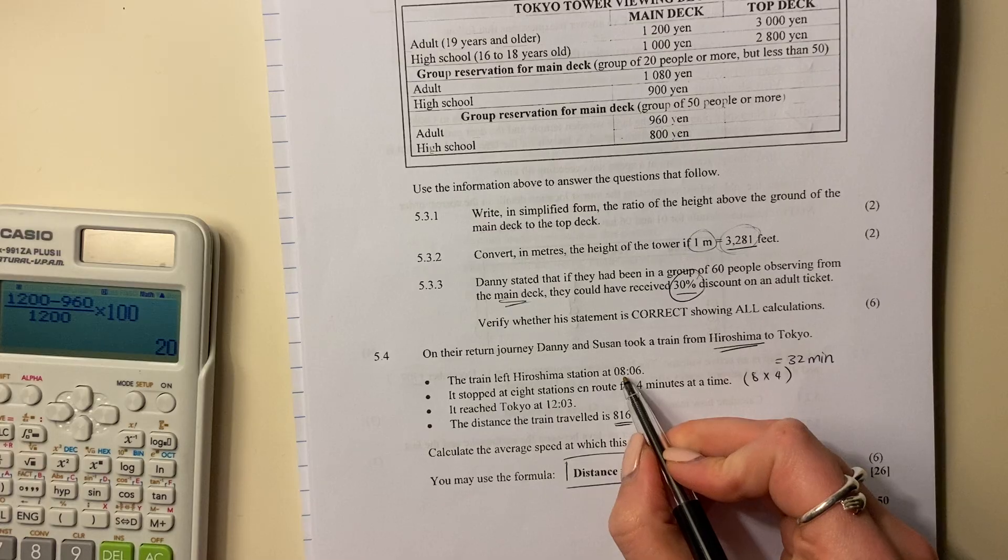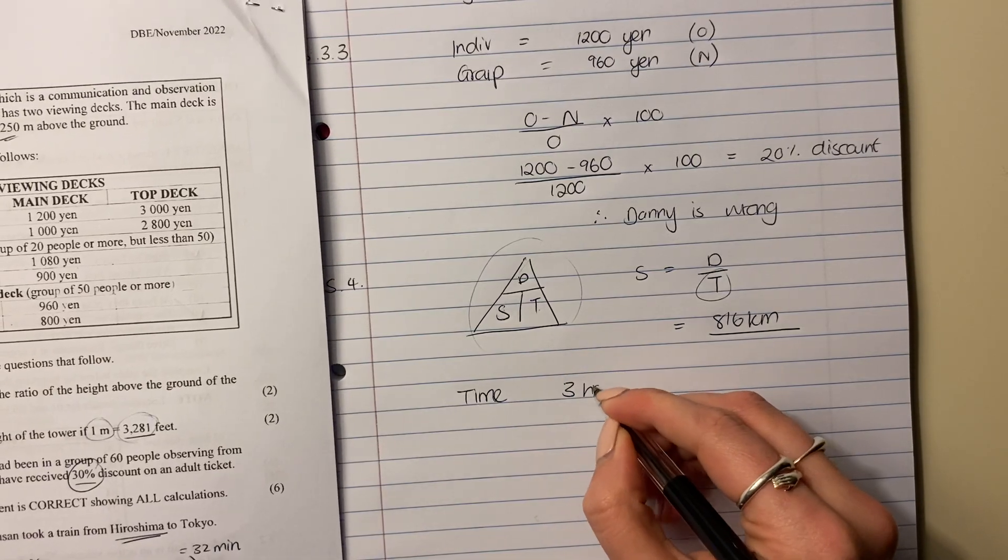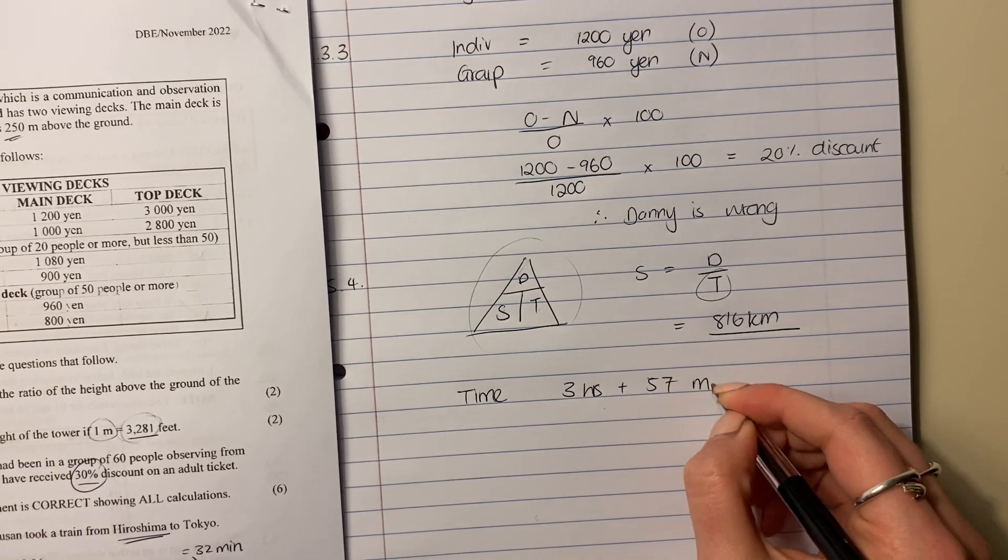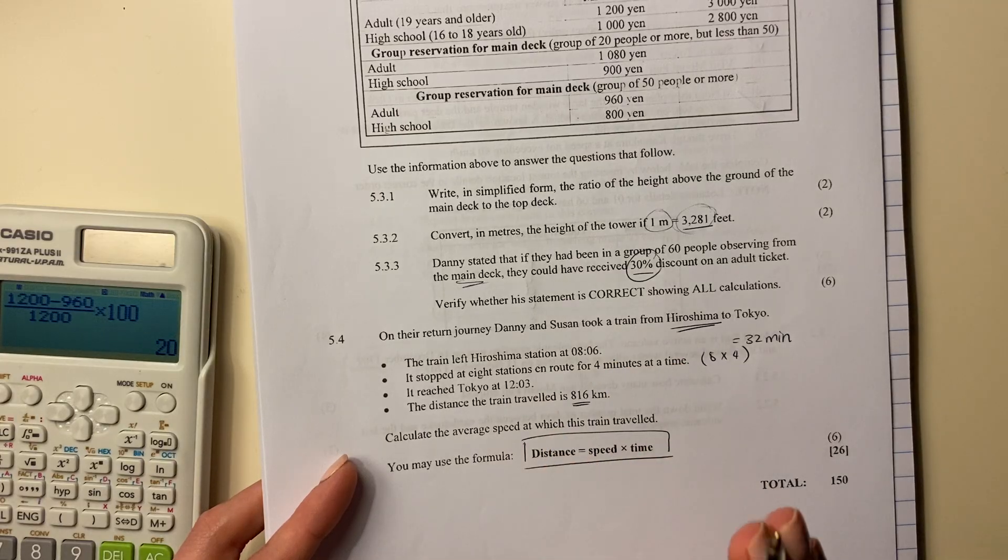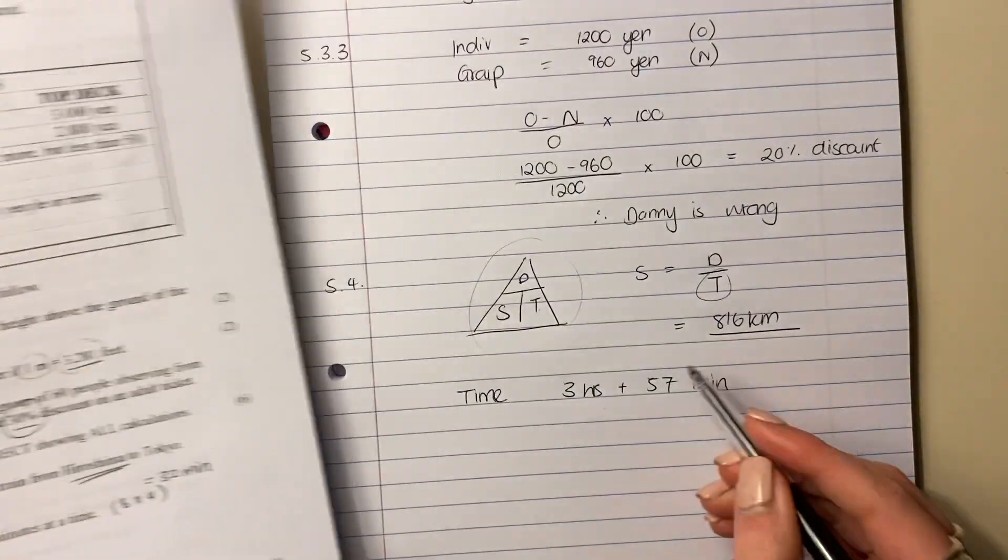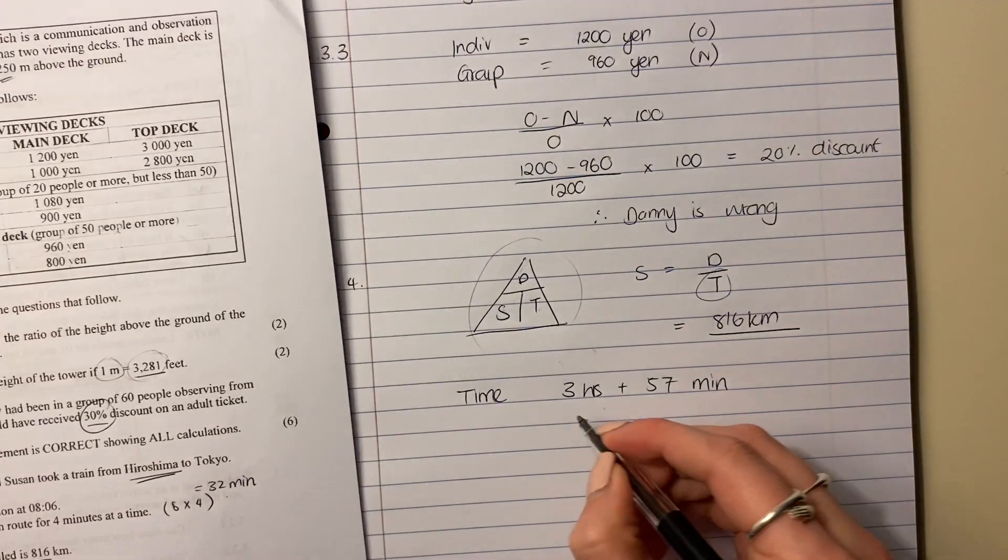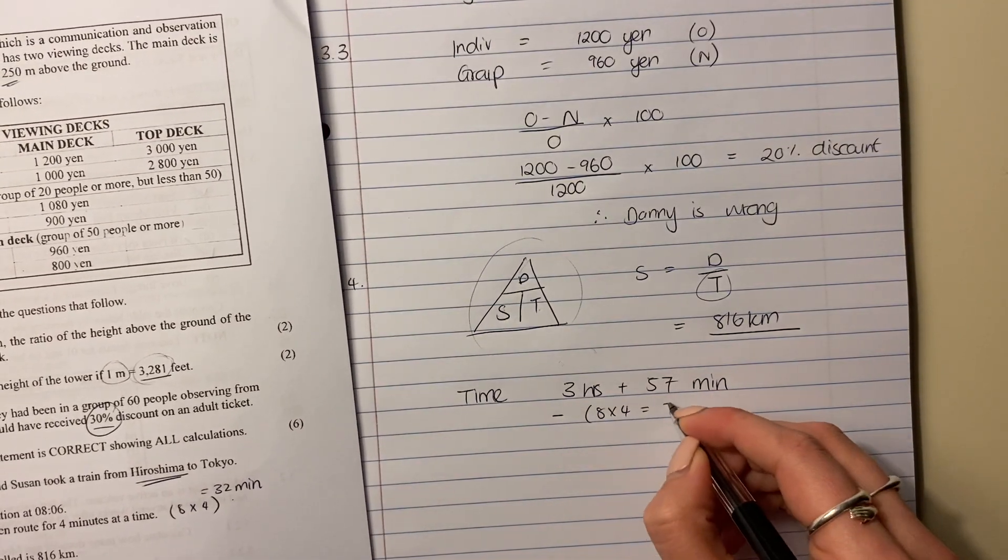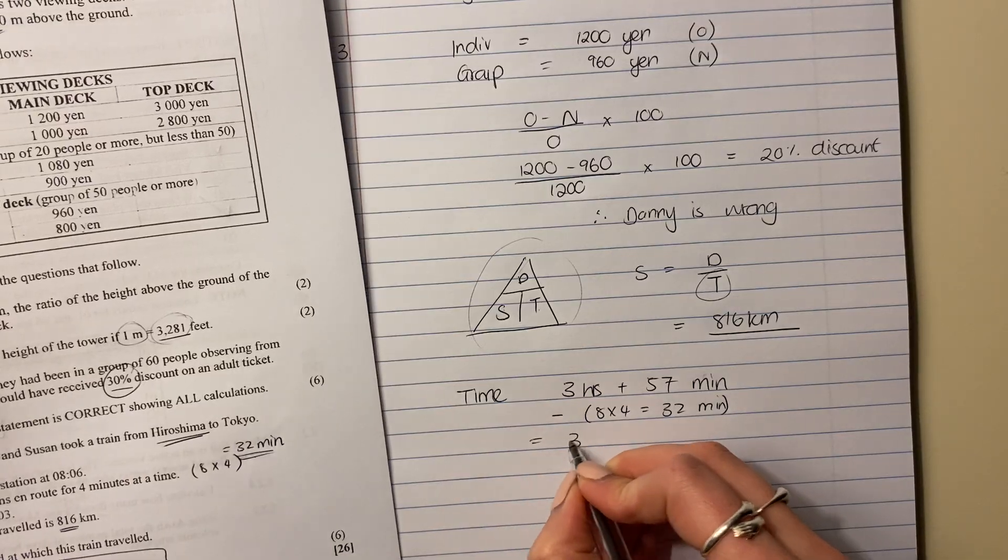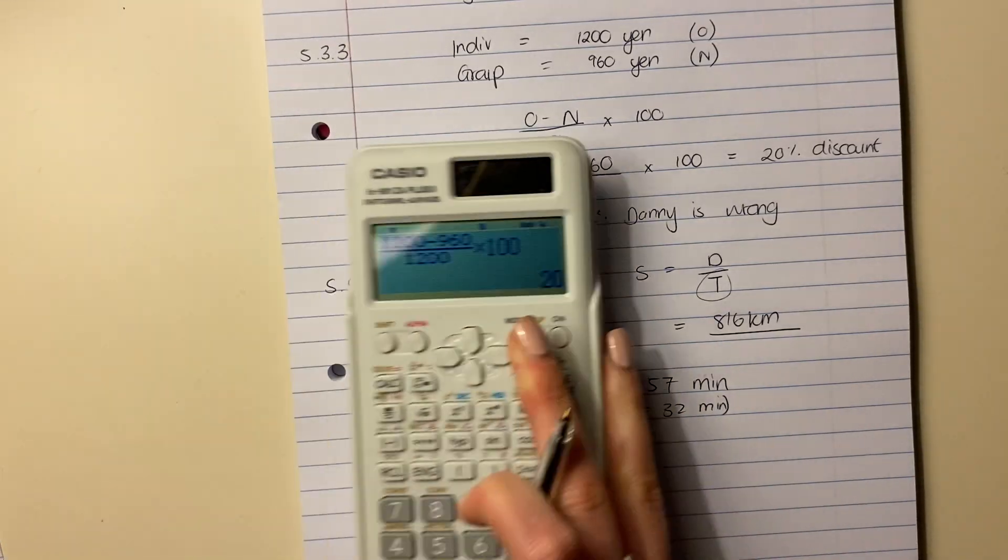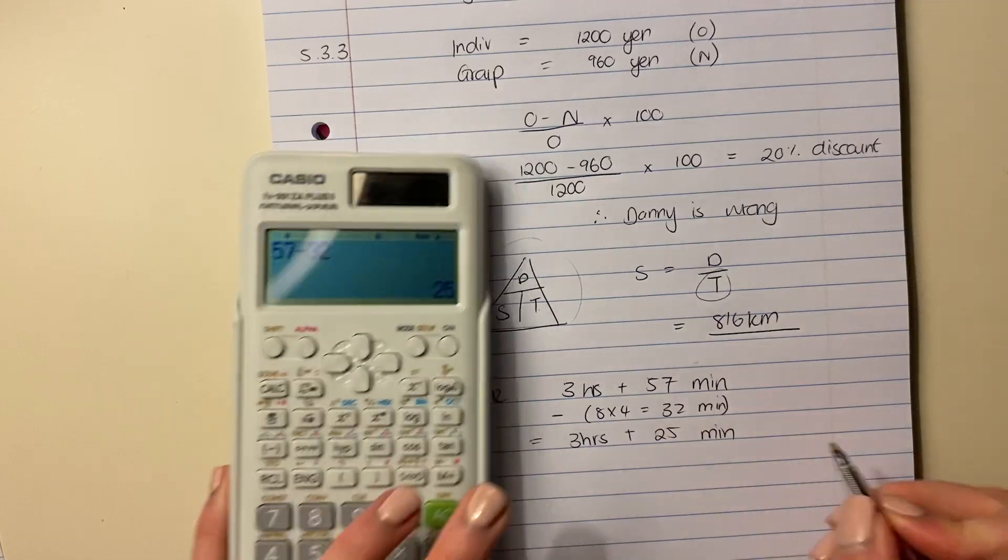Let's look over here. They left at 8.06 and they arrived at 12.03. So it's just under 4 hours. It is 3 hours and 57 minutes. You should be able to see that. It would have been 4 if this was 12.06, but it's 3 minutes less. So it's 3 hours and 57 minutes. But it's talking about when the train is actually moving. Now it's not moving when it's in the station. So you have to subtract off of that 8 times 4, which equals 32 minutes, because of all the stops. So actually it's going to be 3 hours and what is 57 minus 32? 25 minutes.